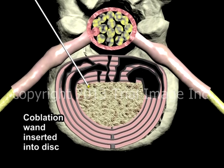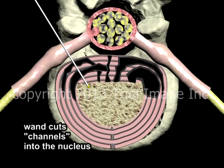An electrical charge is then applied to the coblation wand, which is then advanced into the nucleus, vaporizing nuclear material as it goes and cutting a channel. This vaporizing and cutting action is known as coblation. With repeated insertion and withdrawal, multiple channels are cut into the nucleus.